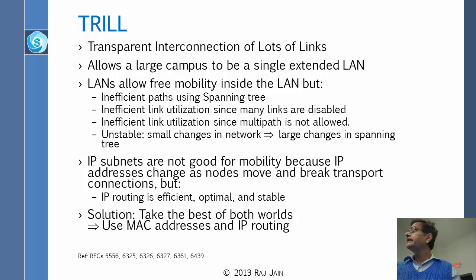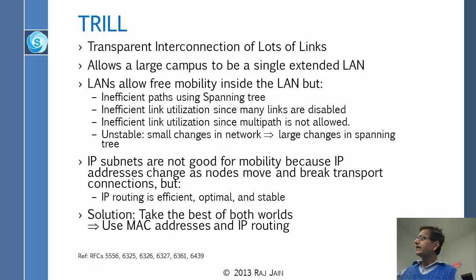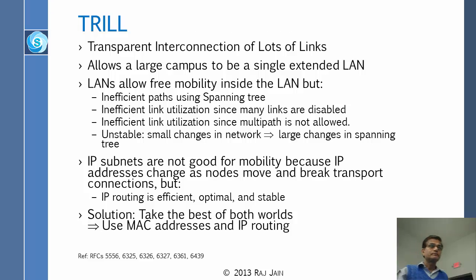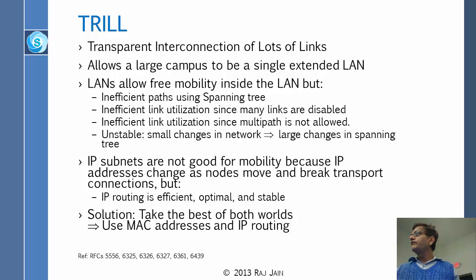On the other hand, IP subnets are not good for mobility because IP addresses change as the node moves and break the transport connections. But IP is efficient, optimal, and stable - all of those spanning tree problems are not a problem with IP. So she said we should take the best of both worlds: use MAC addresses, which allow mobility, but use IP routing.